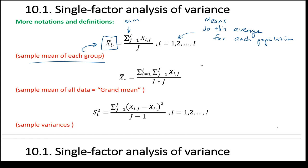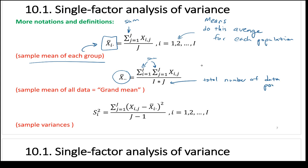The grand mean is x-bar-dot-dot — both dots mean you sum over both i and j, meaning you sum over all data points and divide by the total. In our example that's 24, because it's 6 times 4. Since all populations have the same size, the total data points is just I times J.